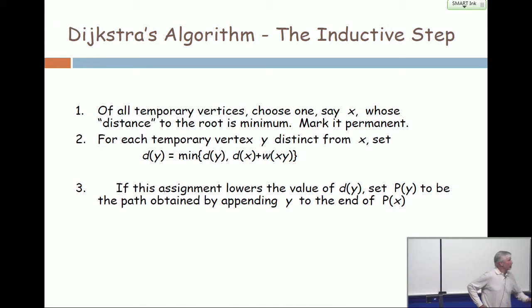And then, for each temporary vertex y distinct from x, you have two ways to get to y. I want you to envision, here is y, it's this chair, and here is x, it's this chair. Now, when I mark the path from here to here permanent, it's provably optimal. So I have a really, really good way to get from the root to here.